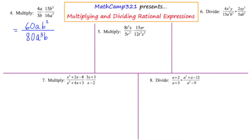Notice how as I stated the answer, I grouped everything in alphabetical order. Even though the b came first in the denominator, I said a cubed b, just to maintain that convention. Now simplifying: 60 over 80 is 3 fourths. An a over an a cubed leaves an a squared in the denominator. And b squared over b leaves a b in the numerator. So the final answer is 3b over 4a squared.